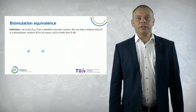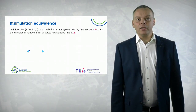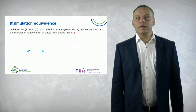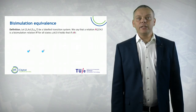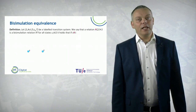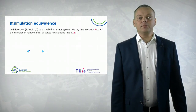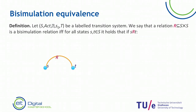Assume we have a transition system given. We say that a particular relation R that relates states is a bisimulation relation if and only if it relates two states S and T, and we can do an A step from S, then it should be possible to mimic that from T.